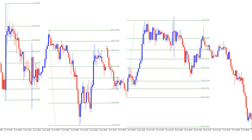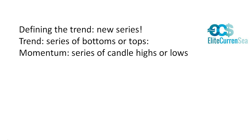Here you can see an example of a range where price is just chopping sideways, going nowhere — no steam forward or downward. You can see that the Fibonacci levels, bottoms and tops are consistently broken, as the range is more important than the fib levels themselves. Defining the trend and understanding momentum becomes important, because if we cannot identify a range or trend we won't know whether to use the fib or not.